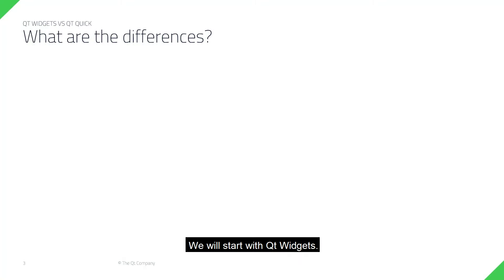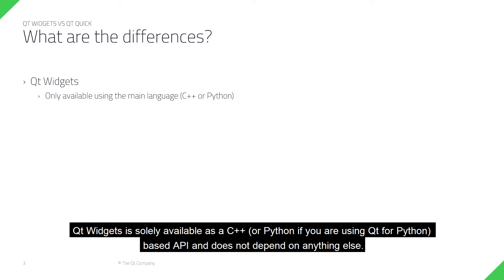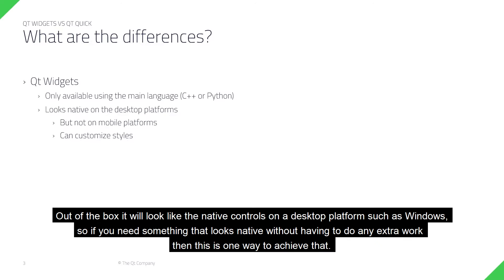We will start with Qt Widgets. Qt Widgets is solely available as a C++ or Python — if you're using Qt for Python — based API and does not depend on anything else. Out of the box it will look like the native controls on a desktop platform such as Windows, so if you need something that looks native without having to do any extra work, then this is one way to achieve that.